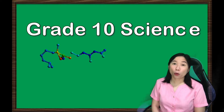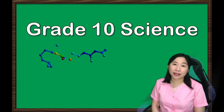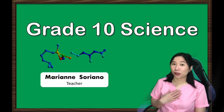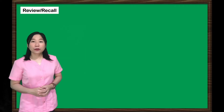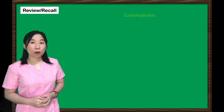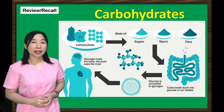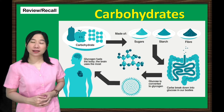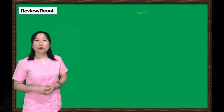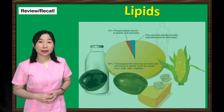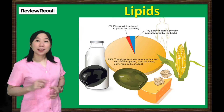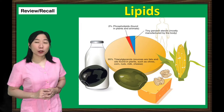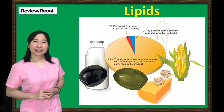Hello students! Welcome to Great Dance Science Lesson, and I'm your teacher, Maumarian Suriano. In our previous science lesson, you have learned that carbohydrates are important in providing instant energy for our cells. There is another form of biomolecules called lipids that its main function is to store energy too. Let's learn more about the importance and function of lipids in today's lesson.